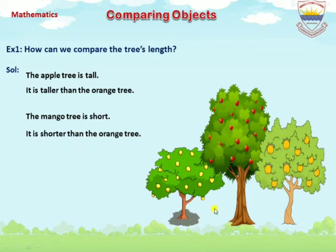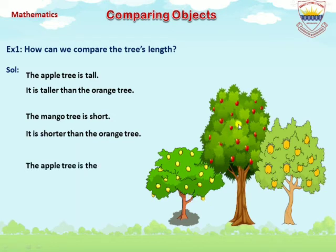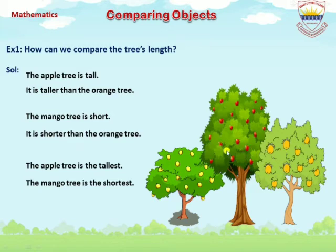We compare the mango tree with the orange tree and the mango tree is shorter than the orange tree. As you see in the picture, the apple tree is the tallest and the mango tree is the shortest. We compared three trees.